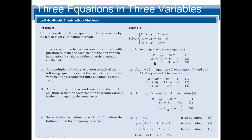For the new third equation, negative 1 times X plus X gives 0X. Negative 1 times negative 2Y gives positive 2Y; 2Y plus 3Y gives 5Y. Negative 1 times negative 3Z gives positive 3Z; 3Z plus 4Z gives 7Z. Negative 1 times positive 5 gives negative 5; negative 5 plus 1 gives negative 4. So now we have X eliminated from both the second and third equations.